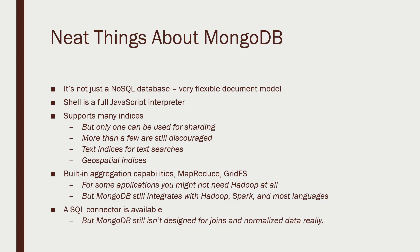Despite talking a lot about limitations, there are some very neat things about MongoDB too. The big plus is that it's not just a NoSQL database but can store pretty much anything you want. It also has a shell with a full JavaScript interpreter, so you can actually run JavaScript functions across your entire MongoDB database pretty easily. It supports many indices — though you're discouraged from using more than a few in a given collection, generally no more than 4 to 10 in practice — and indices are resource-intensive, so keep them at a minimum. MongoDB is a really good choice for storing big documents of information or text.